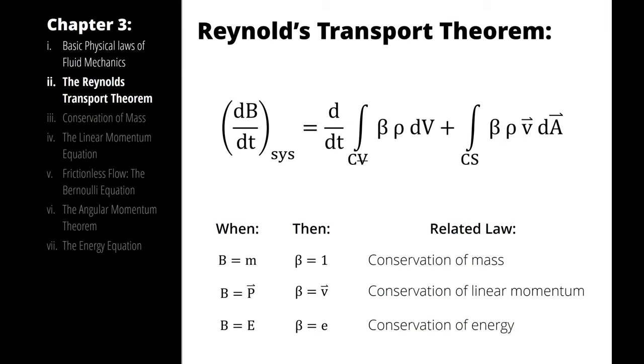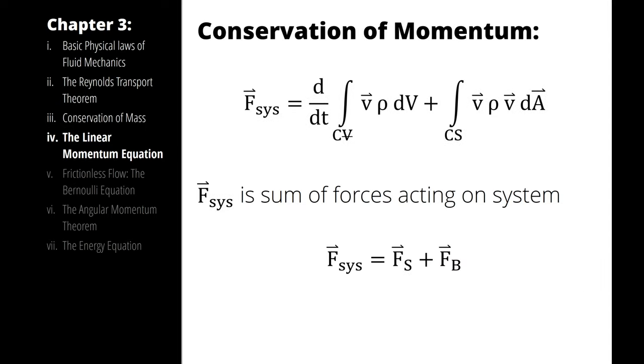When we simplify the Reynolds transport theorem for momentum, we are plugging in a beta value of velocity and a b value of momentum, which yields the derivative of momentum with respect to time of the system, which, remember, is our definition of force.